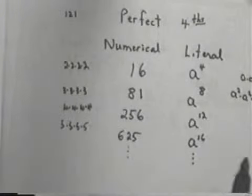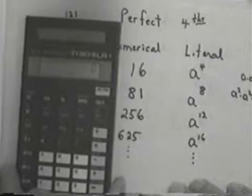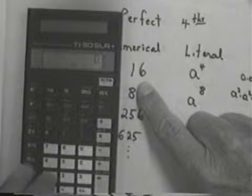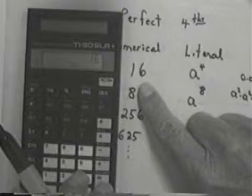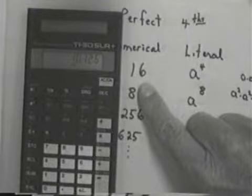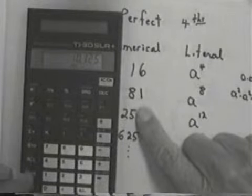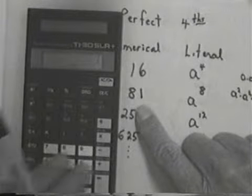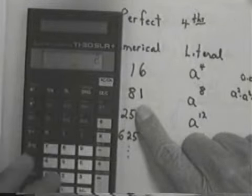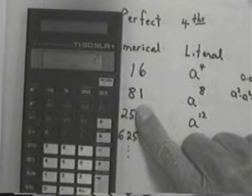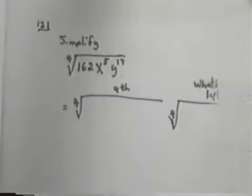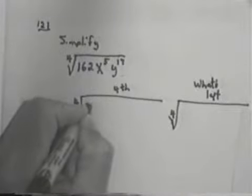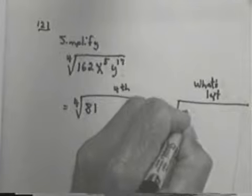Well, would any of these numbers go into 162? Let's check it out. Let's start with 16. Let's do 162 divided by 16. And it doesn't come out even. Let's try 81. 162 divided by 81 equals, aha, that works. It came out. So, I can write 162 as 81 times 2.